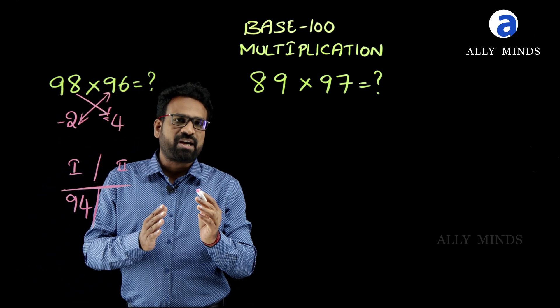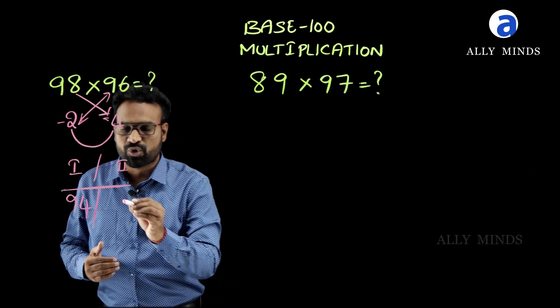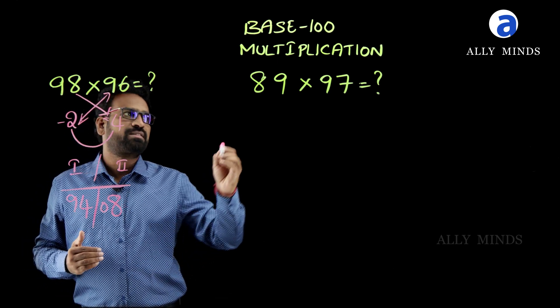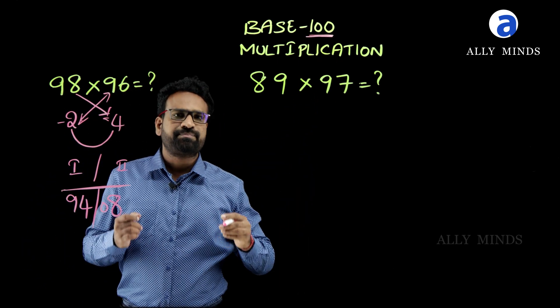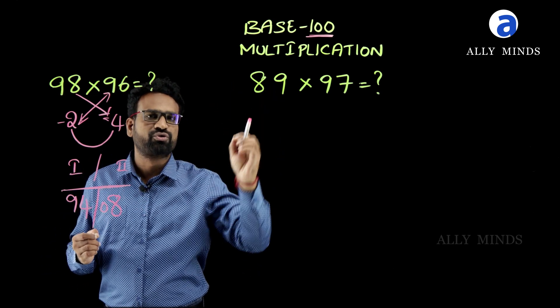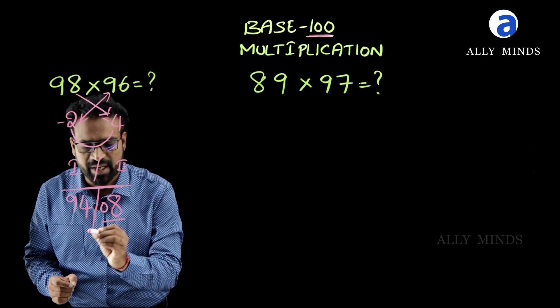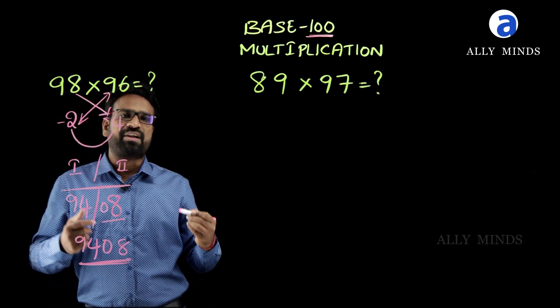And for the second part of the answer, just multiply these two numbers. What is 2 times 4? 2 times 4 is 8. But we have to write it as 08. Why? Because we are doing multiplication under base 100. Here base has 2 zeros, so there should be a double digit number in the second part. So I have written it as 08. So the final answer is 9408. This is the final answer.